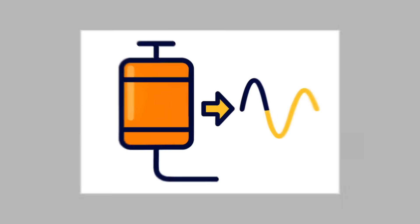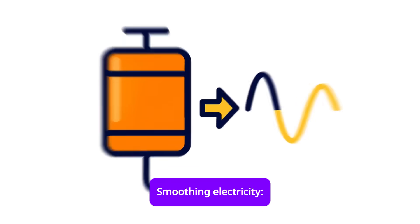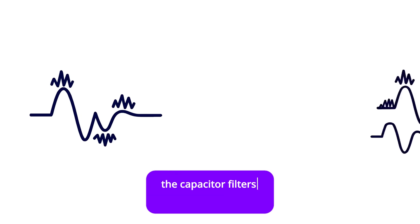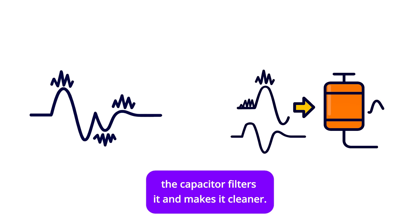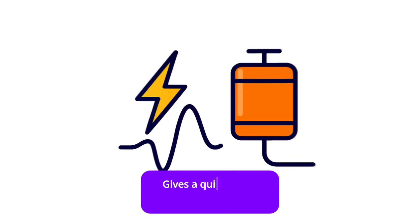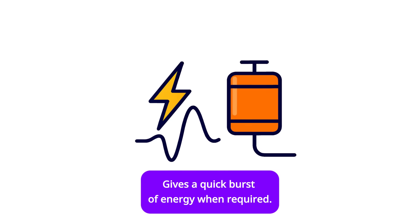Functions: smoothing electricity. If the current has ripples or noise, the capacitor filters it and makes it cleaner. It gives a quick burst of energy when required.